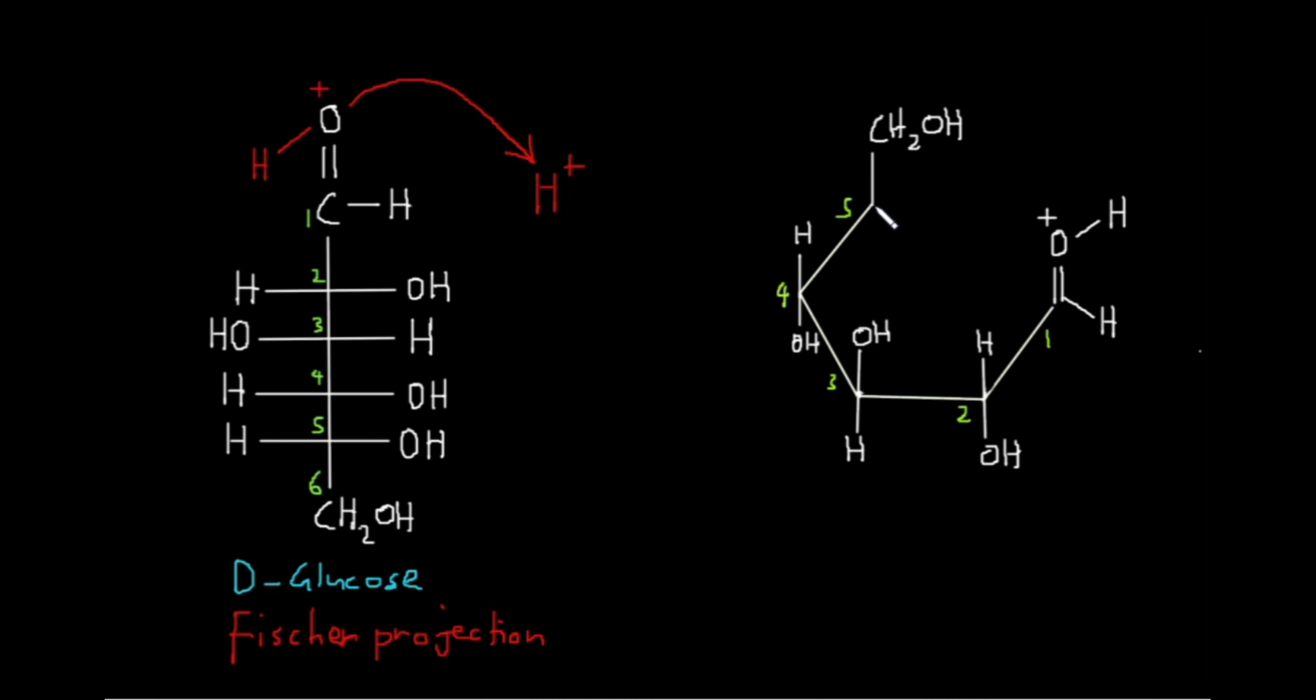This CH2OH will be going upwards like this. The hydrogen atom will be going downwards, which leaves us with the hydroxyl group that will be projected to the right. Remember earlier I said that the oxygen in the carbonyl group is highly electronegative, which means it will pull the bond pairs of electrons away from this carbon atom towards itself. Hence this oxygen has a partial negative charge and this carbon has a partial positive charge.